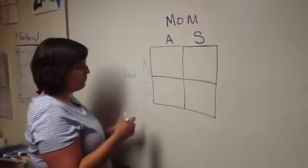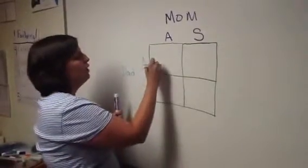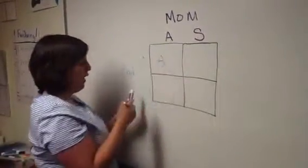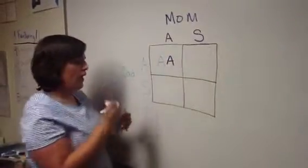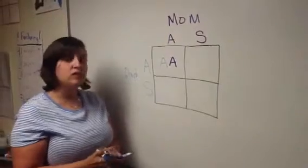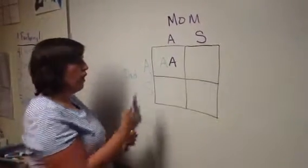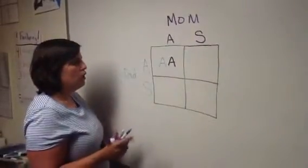I have an A here and an A here. So in this box, our child could pick A-A hemoglobin. So A-A is completely healthy, completely void of any sickle cell trait or disease at all. So I have one option of A-A, or healthy hemoglobin.